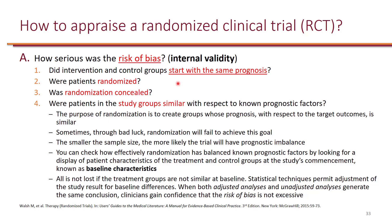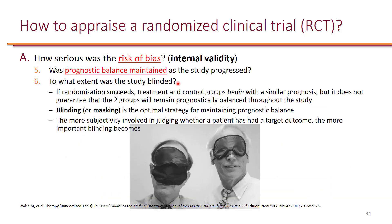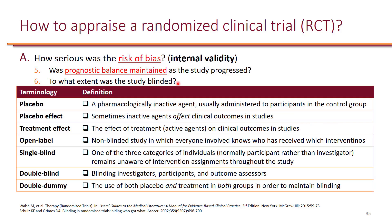Occasionally, when randomization doesn't result in similar groups as far as baseline characteristics, there are statistical techniques that can be applied to adjust for those imbalances. As the study progresses, it's important that the two groups continue to remain similar in prognostic factors — that's where blinding comes into play. Studies that are open-label have no blinding; some studies are single-blind or double-blind, where both investigator and participants are blinded.